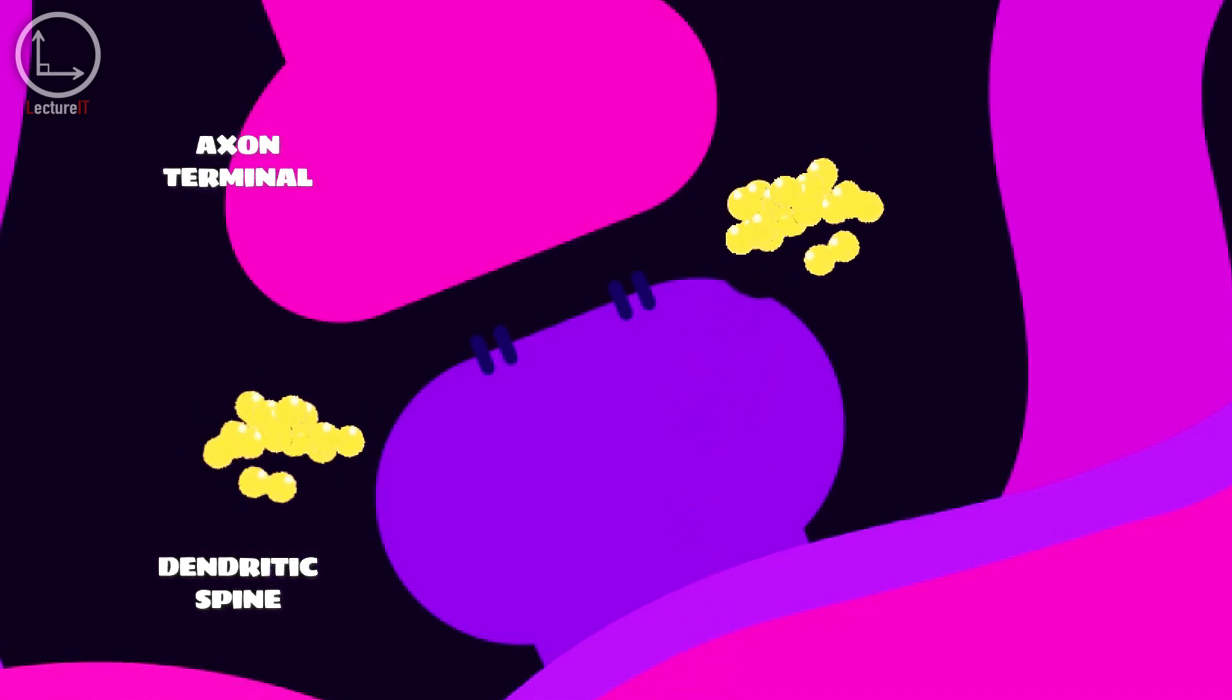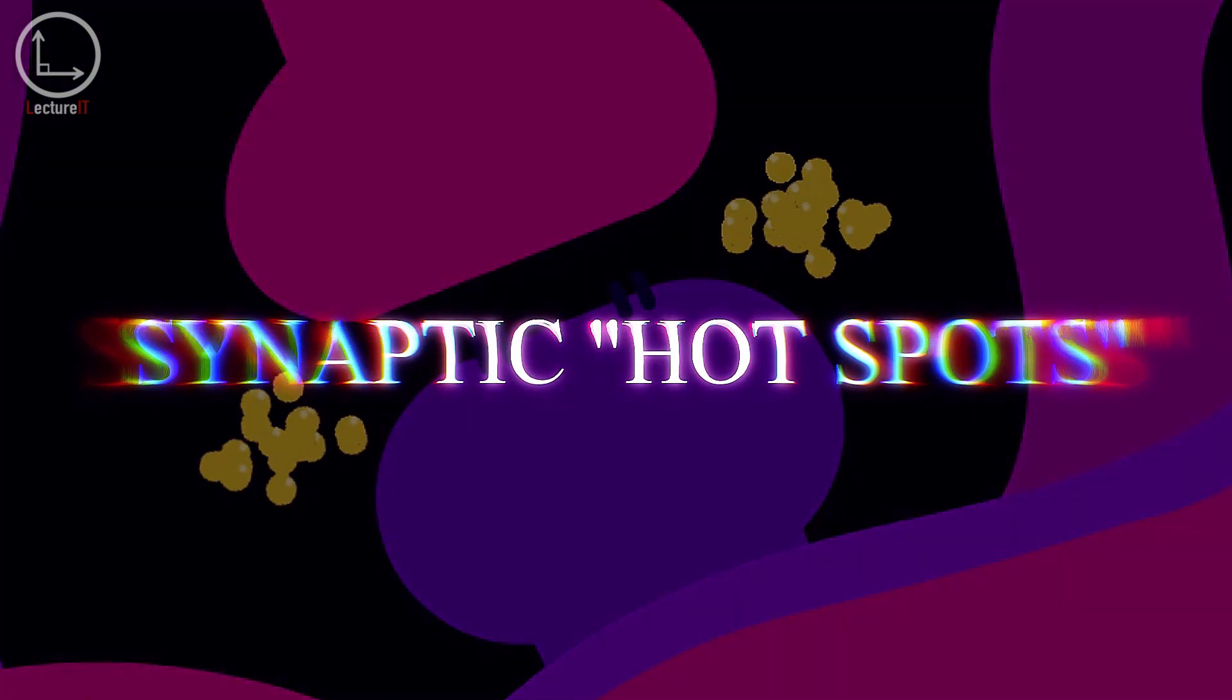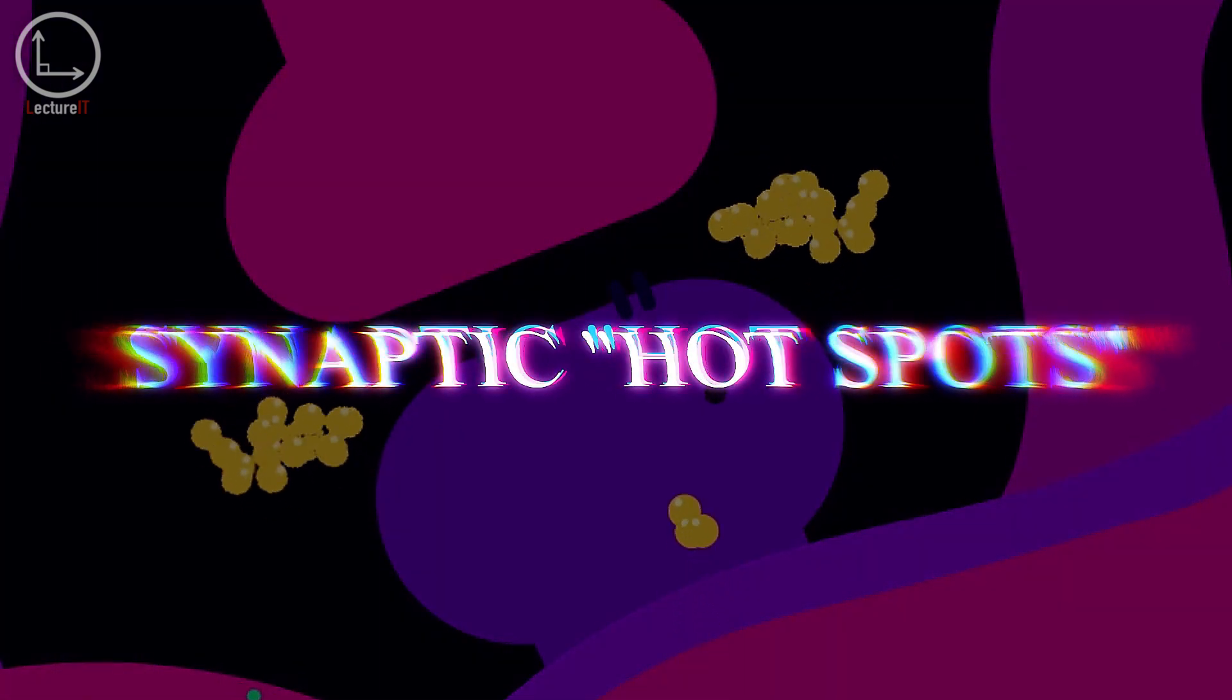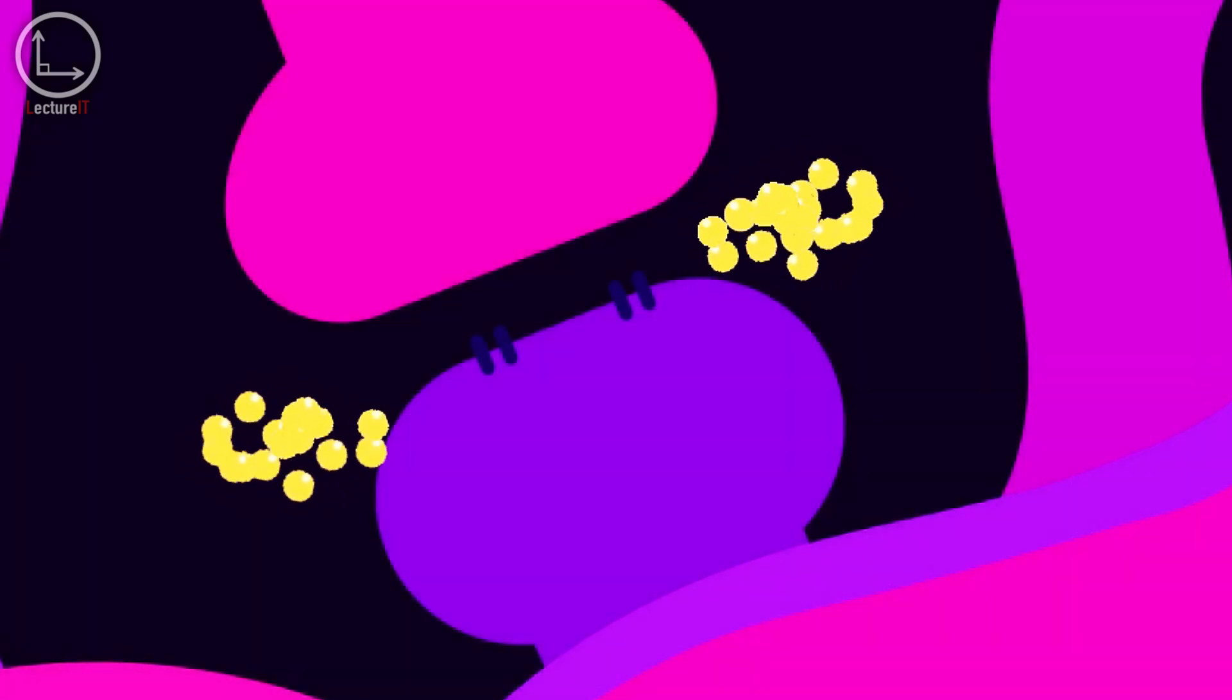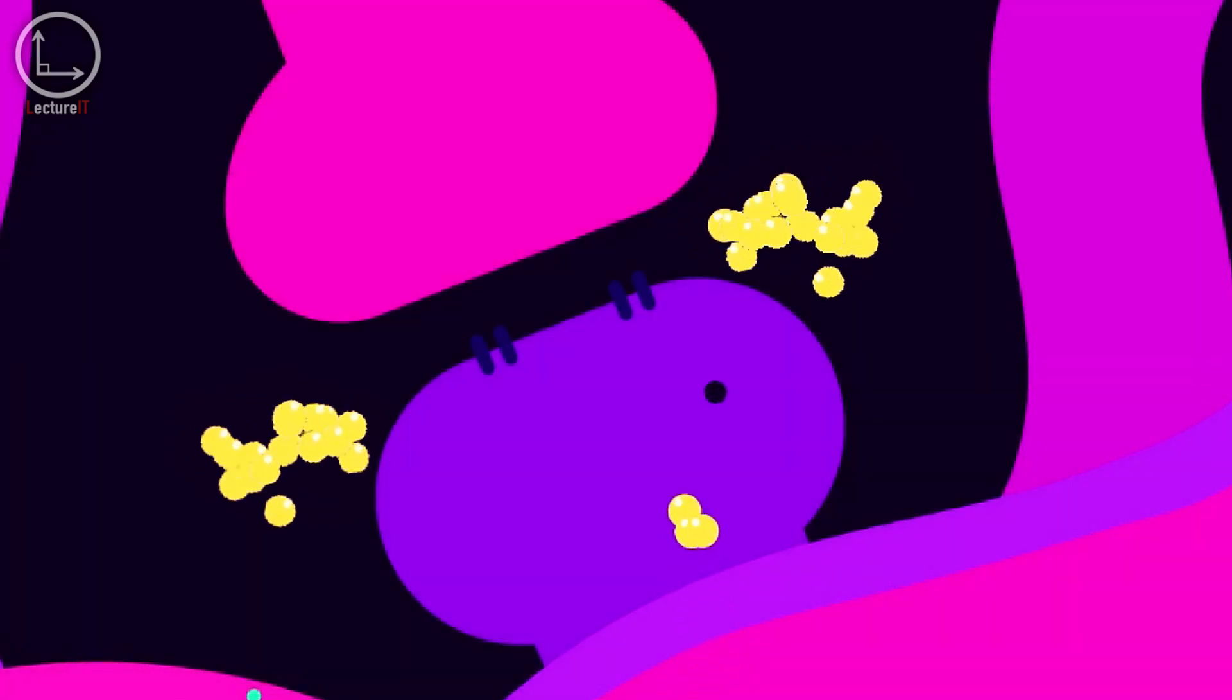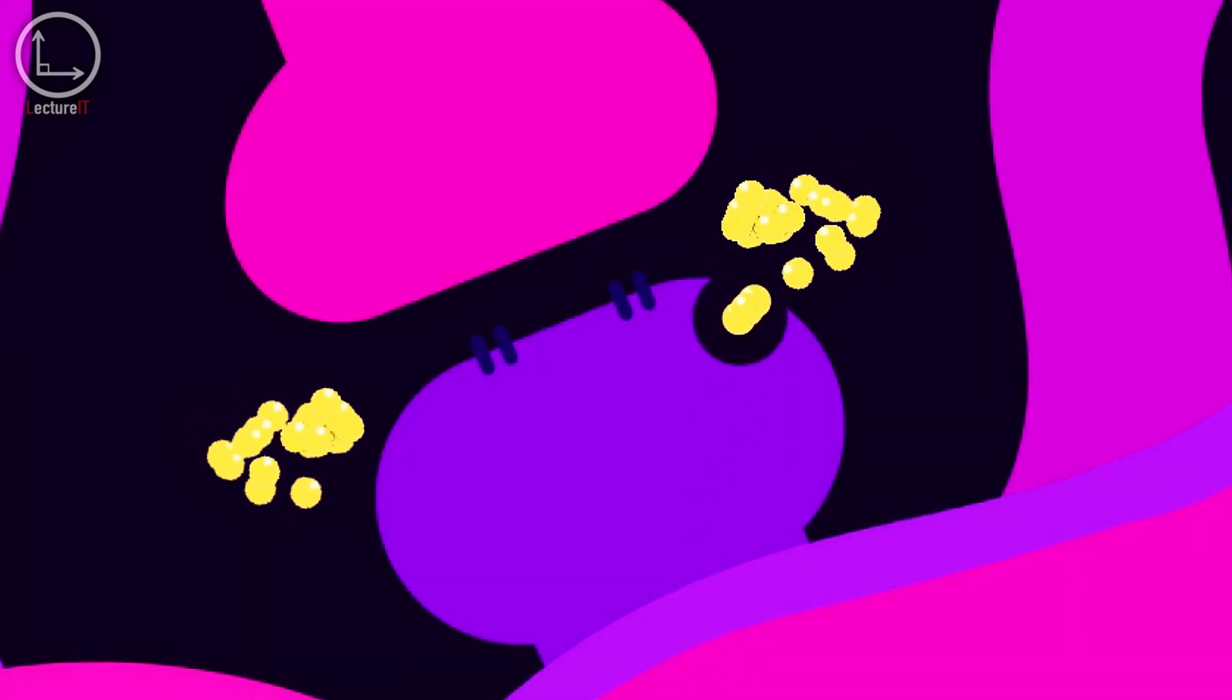These synaptic sites, often referred to as synaptic hotspots, are critical regions for synaptic plasticity. The continuous production and accumulation of these proteins lead to structural and functional changes at the synapse.